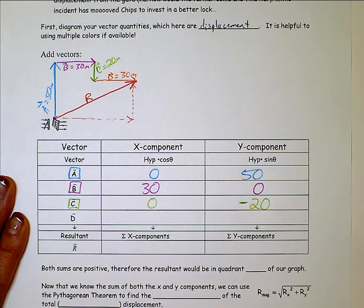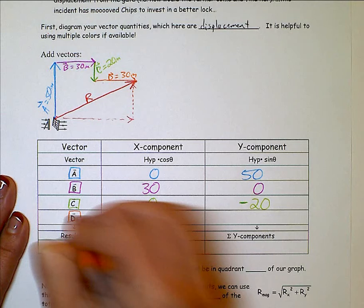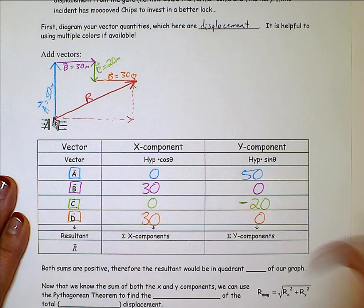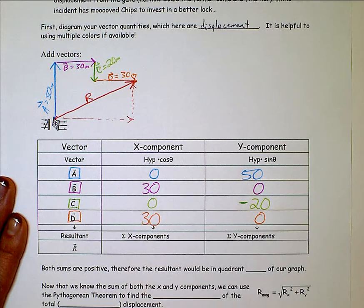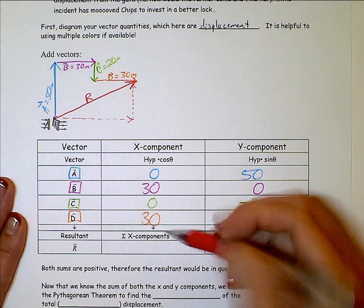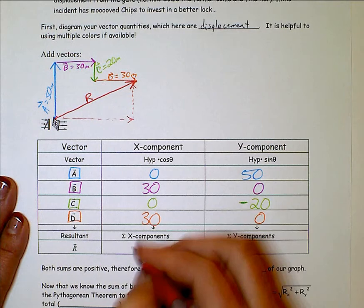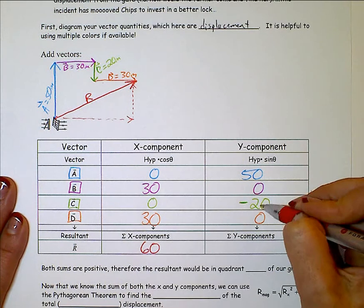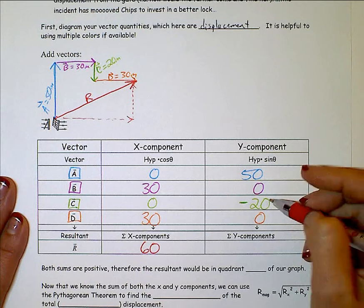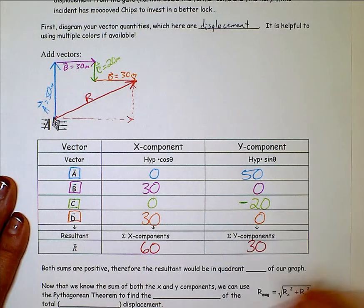And then D, my last one, is 30 forward in the x and none in the y. Then you're going to sum your x component. And I end up with 60. And sum these. Don't forget about the negative if it's going down or backwards. And I get 30.